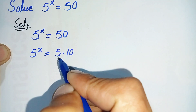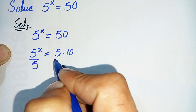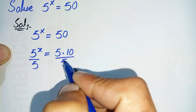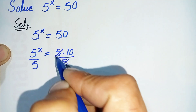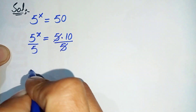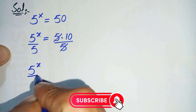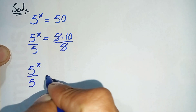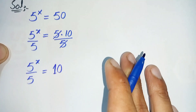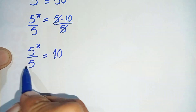Now we will divide both sides by 5. In the right hand side this 5 and this 5 will cancel each other, so this equation will become 5 raised to power x over 5 is equal to 10.